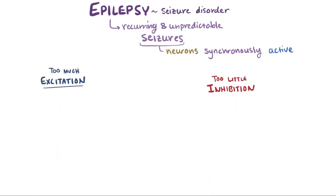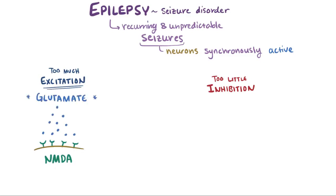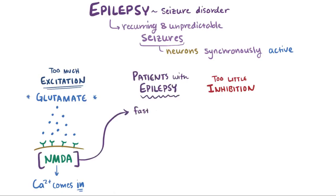The main excitatory neurotransmitter in the brain is glutamate, and NMDA is the primary receptor that responds to glutamate by opening ion channels that let calcium in — a positive ion that tells the cell to send signals. Some patients with epilepsy seem to have faster, long-lasting activation of these receptors.